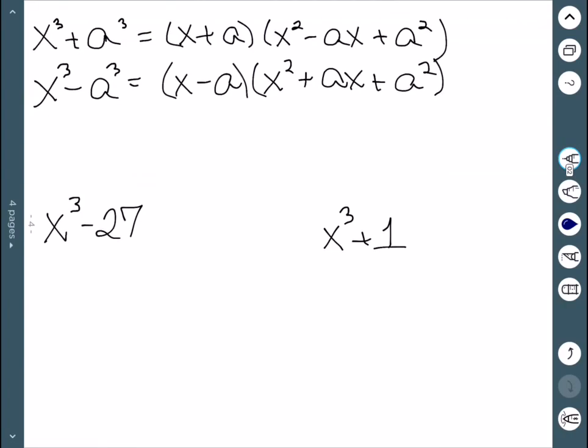We also have the sum and difference of cubes. Unfortunately, these cannot be factored using the methods that we'll learn. So it is important to recognize these formulas. So x cubed plus a cubed, if both of our terms are perfect cubes, we have x plus a times x squared minus ax plus a squared. If we change that to a negative x cubed minus a cubed, that's x minus a times x squared plus ax plus a squared.